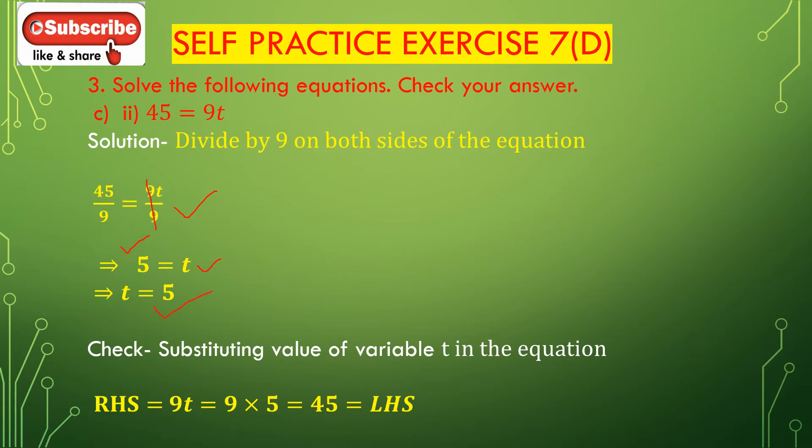Now we check the answer by substituting t = 5 in this equation. Right hand side: 9t = 9 multiplied by 5 = 45, which is equal to the left hand side. So t = 5 is satisfied in the equation 45 = 9t. The value for the variable t is 5.